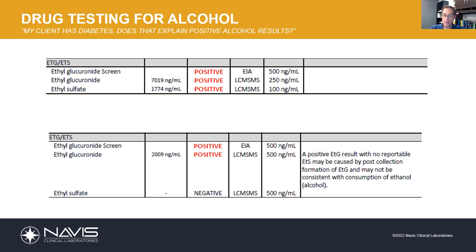In another scenario, we have a positive ETG screen where ethylglucuronide is detected but ethylsulfate is negative. This is an unusual scenario, and we flag it on our final reports: positive ETG result, no reportable ETS — may be caused by post-collection formation of ETG, and may not be consistent with consumption of alcohol. So be looking out for that flag in your final report. If you see it, it's a possibility that you've got a diabetic who had a UTI or a yeast infection and they fermented that ethanol.